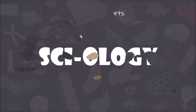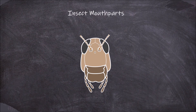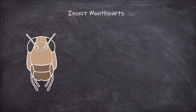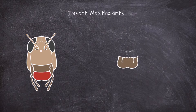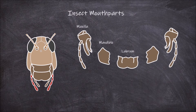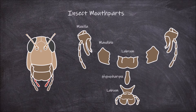Welcome back to my channel. In today's video we're going to be going over the parts of the insect mouth and the different kinds of modifications of the mouth parts. The mouth parts of insects vary greatly but all consist of the same 5 basic parts: the labrum, the mandibles, the maxillae, the hypopharynx, and the labium.